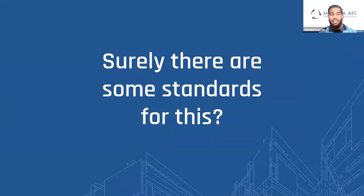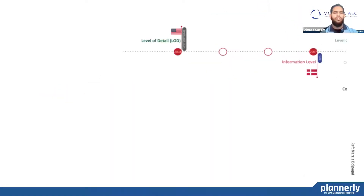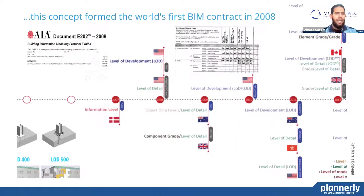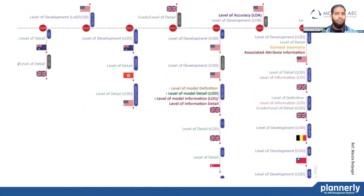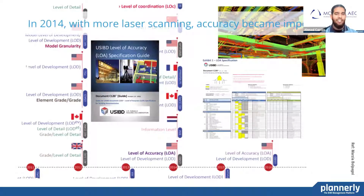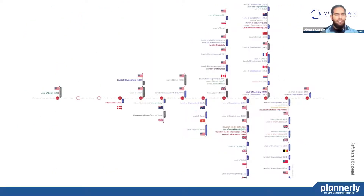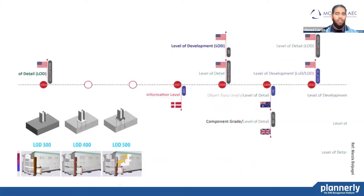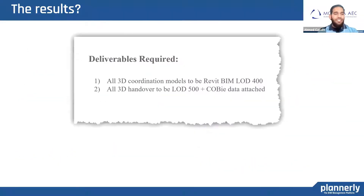Surely there's a better way with some standards. Starting in 2004, solving the challenge of planning 3D geometry, the first BIM contract was formed in 2008 in the USA. LODs were developed in 2011. The 'I' for information in BIM started to become important, then there was the PAS 1192. In 2014, laser scanning and accuracy became important with Level of Information. And now we have even more refinement in the ISO standards, with powerful documentation becoming available. Yet despite all these standards, we still sometimes see requests like 'all 3D coordination models to be Revit BIM LOD 400' or 'LOD 500 plus COBI.'